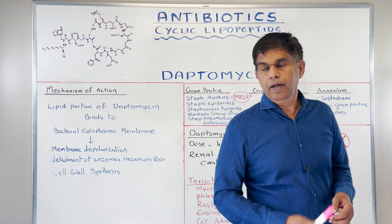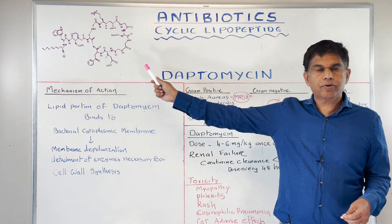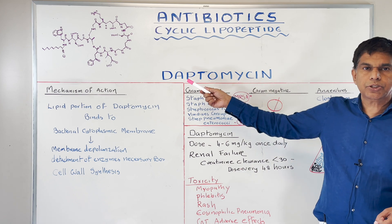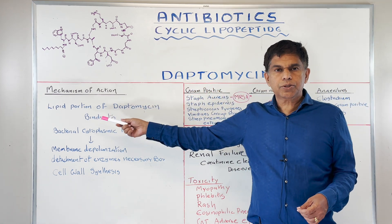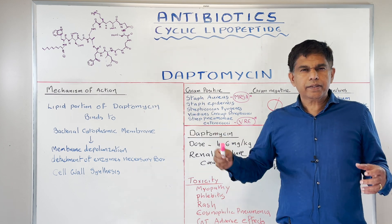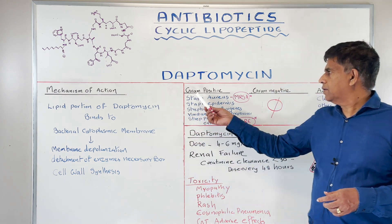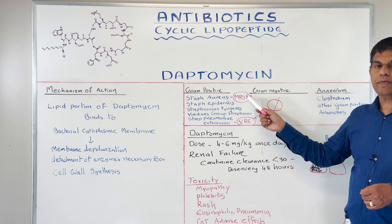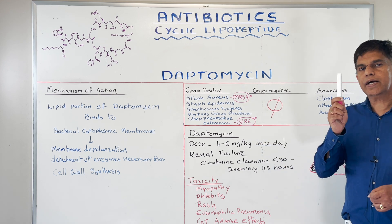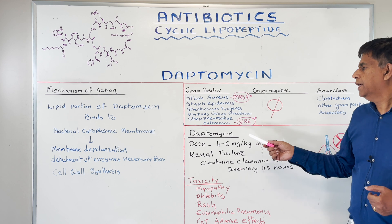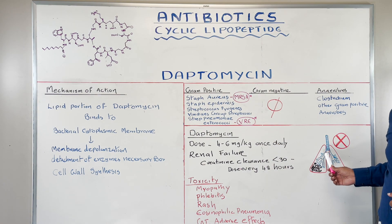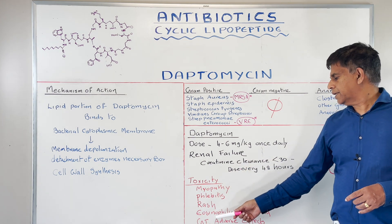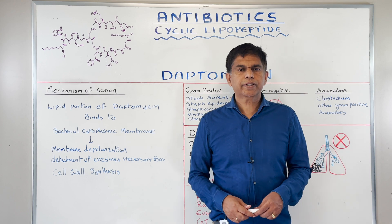Let's summarize one more time. We have a cyclic lipopeptide with 13 amino acids — 10 of them in the cycle and the others forming an exocyclic tail — and the drug name is daptomycin. The mechanism of action: daptomycin binds to the bacterial cytoplasmic membrane and makes a hole in it. There is no gram-negative coverage. It is a great drug for methicillin-resistant Staphylococcus aureus and vancomycin-resistant enterococci, where there are few other options. It does not work in the lungs, so don't prescribe it for pneumonia. Key toxicity includes eosinophilic pneumonia. Thank you so much for watching — we'll be back with another presentation.